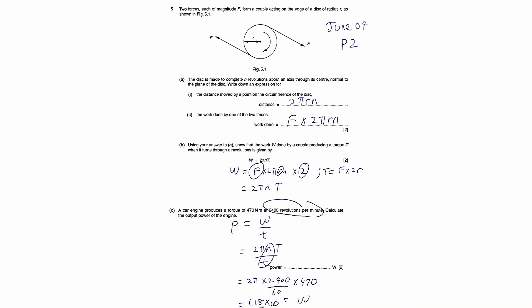And the next part, using your answer shows that the work done by a couple producing torque t and it turns through n revolutions is given by this formula. Remember what you did was you already found the work done by one of the two forces. If they want the work done by a couple, it means both forces.